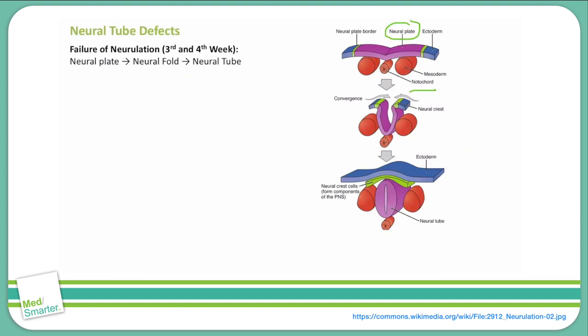The neural plate then undergoes a conformational change to form the neural fold, which you can see here. The neural fold eventually undergoes a further conformational change to become the neural tube. An error in any step of this process — from formation of the neural plate to the neural fold to the neural tube — can lead to a neural tube defect.